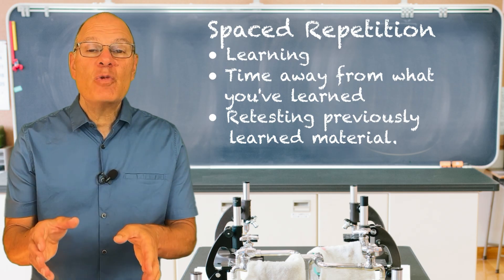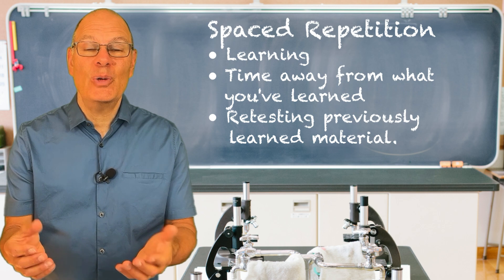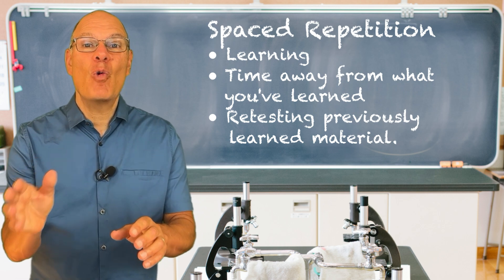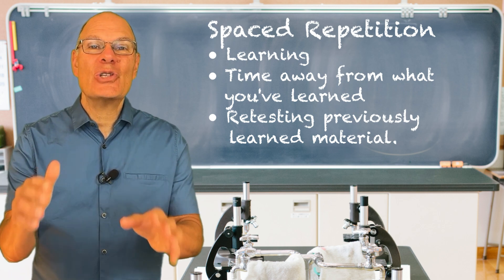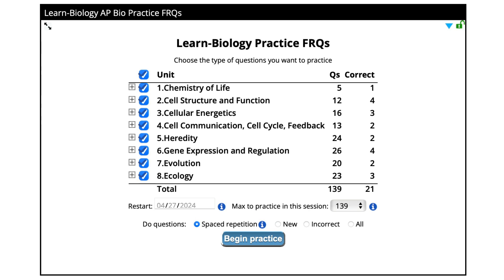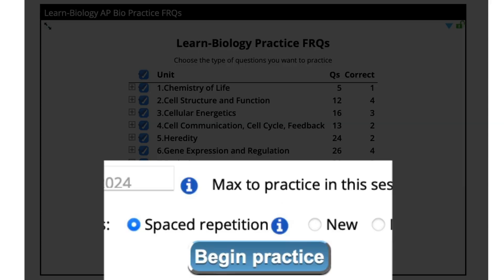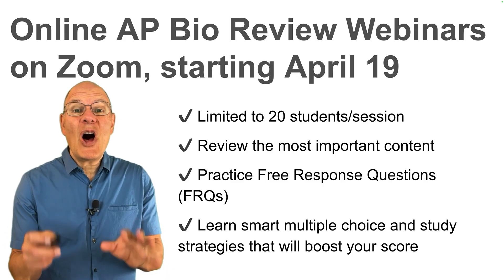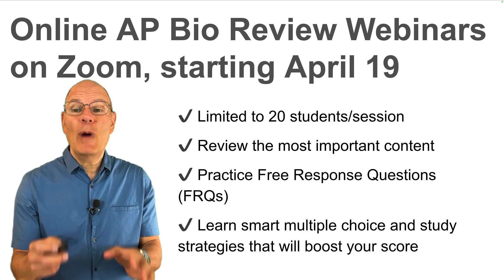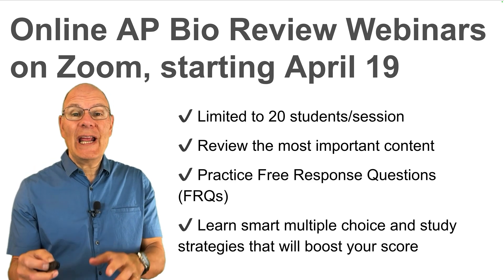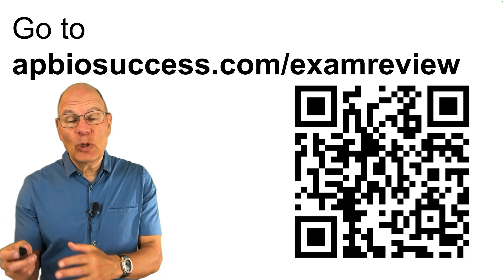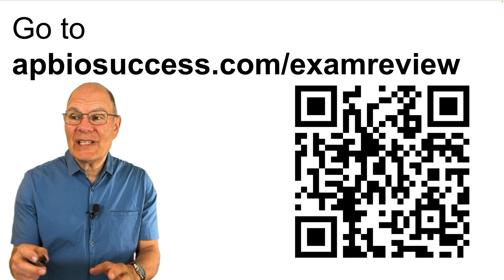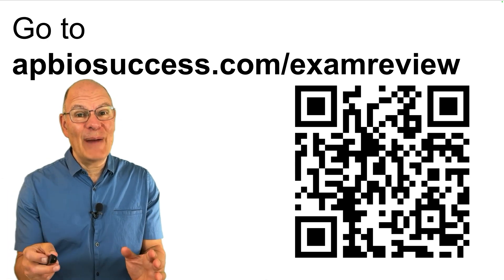Principle five: spaced repetition. Spaced repetition involves learning something new, giving yourself a little time away from it, and then testing yourself on it again. The quizzes on learn-biology.com have a spaced repetition setting by default that consolidates what you've previously learned and keeps it fresh in your memory. Also, there's a series of online AP Bio review webinars on Zoom starting April 19th — go to apbiosuccess.com/examreview to sign up and learn more.